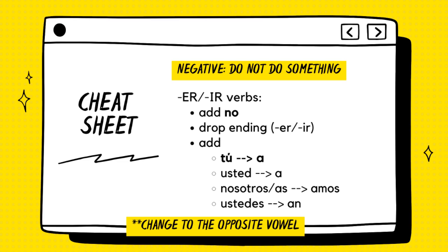For negative commands ending in ER and IR verbs, add no, drop your ER or IR ending, then add: A to your tú form, A to your usted form, Amos to your nosotros or nosotras form, and An in your ustedes form.